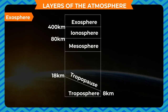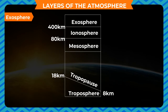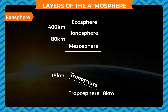The exosphere is the outermost layer of the earth's atmosphere. It extends beyond 400 kilometers above the earth's surface, although its outer limit is not clearly known. It is assumed to extend up to about 800 kilometers.